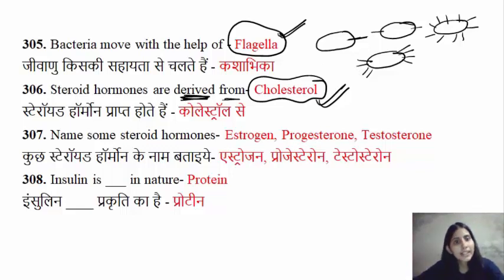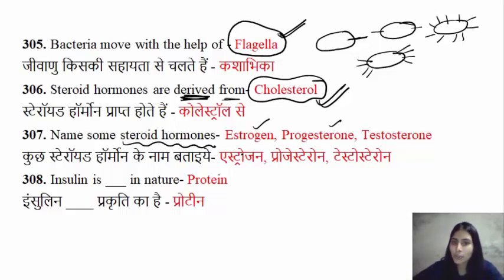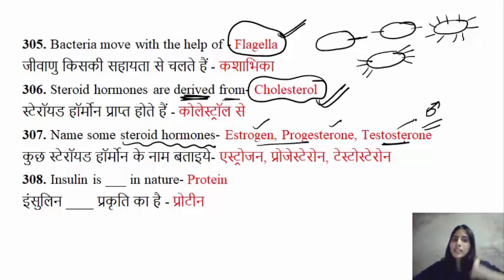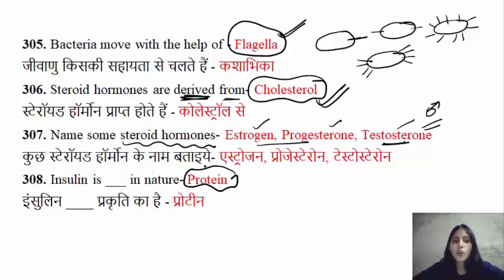Some steroid hormones like estrogen and progesterone are mainly found in higher amounts in the female body. And testosterone is found in higher amounts in the male body. The next question is about insulin, which is a protein hormone. It is secreted by the pancreas.